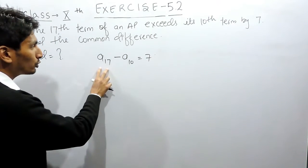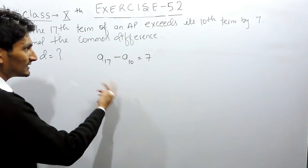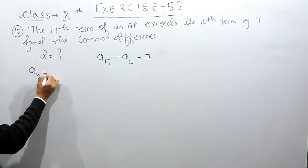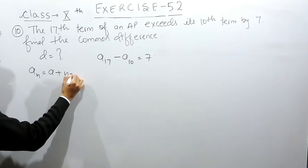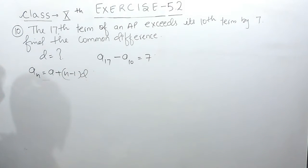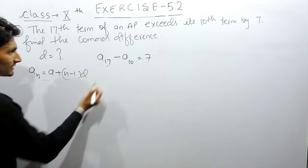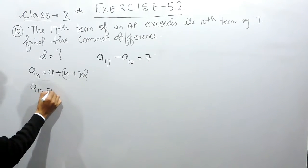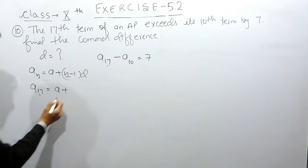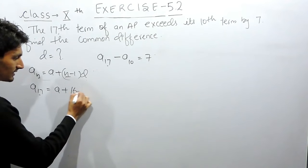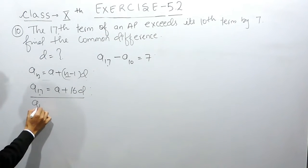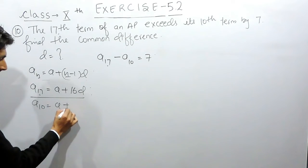How to find the 17th term or the Nth term? We have a formula. The Nth term is A plus (n-1)D. So A17 will be A plus 16D, and similarly the 10th term will be A plus 9D.